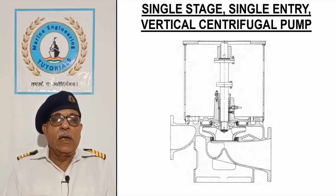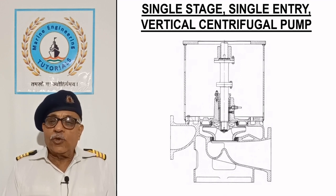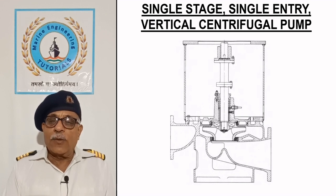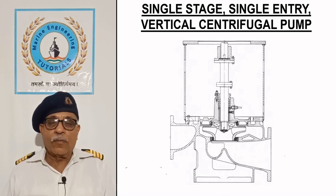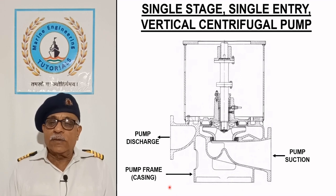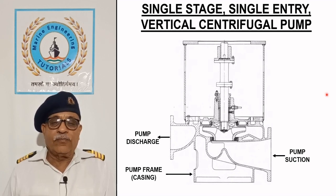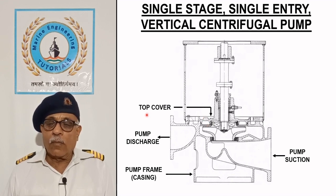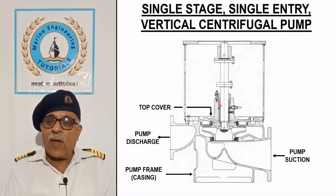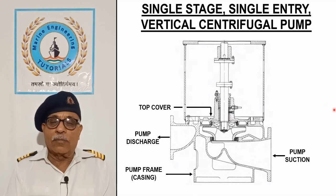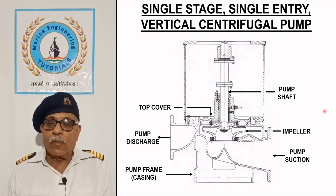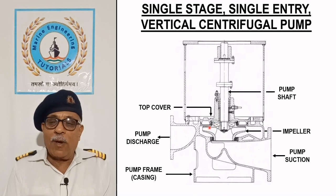Single stage single entry vertical centrifugal pump: the sketch shows the construction and operation of a single stage single entry vertical centrifugal pump, which is a common element on ships as it saves space. The pump consists of a casing mounted on its foundation and is equipped with suction and delivery connections. The top cover consists of a line bearing for supporting the shaft, where the liquid being handled provides cooling and lubrication. The pump shaft passes through the top cover and is attached to the impeller with the help of a key and a nut.